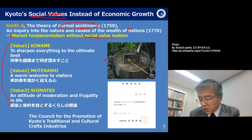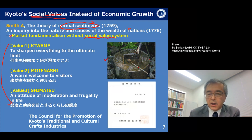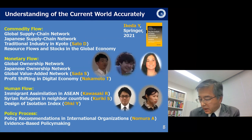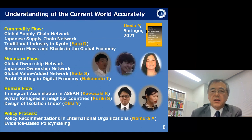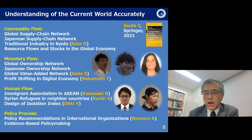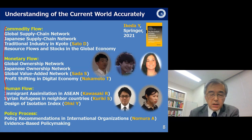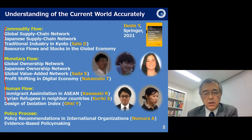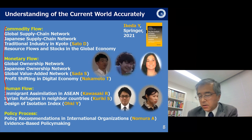I propose three axes: target, strategy, and value system. For the first strategy, we need to understand our world accurately. For that purpose, we collaborate with many students to understand the global flow of commodities or goods, money or capital, and human labor. In these studies, many students contributed to quantify the world in a quantitative and objective way.